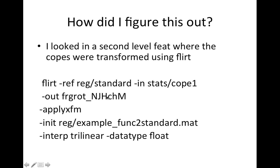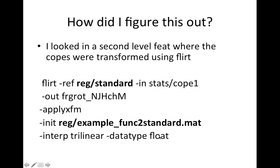The output is a temporary name, because all the copes once put in standard space are concatenated to make a 4D file — the filtered_func_data in the second level analysis. The rest of the FLIRT call uses 'applyxfm', which says just apply this registration .mat file. The .mat file it uses is example_func2standard.mat, with a specified interpolation type and floating point output. The key things to focus on are the reference image and this .mat file.